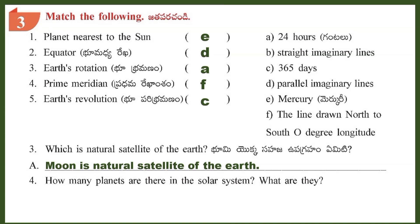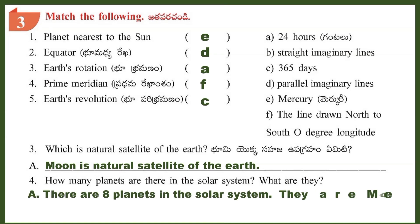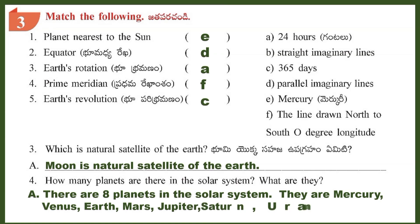Question 4: How many planets are there in the solar system? What are they? Answer: There are 8 planets in the solar system. They are Mercury, Venus, Earth, Mars, Jupiter, Saturn, Uranus, and Neptune.